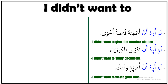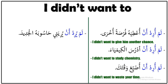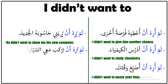Now let's see 'he didn't want to' or 'she didn't want to.' Please look at the first sentence. لم يرد أن يرياني حاسوبه الجديد — it means 'he didn't want to show me his new computer.' لم ترد أن تركب معي السيارة — it means 'she didn't want to get in the car with me.'